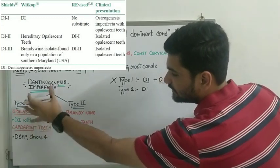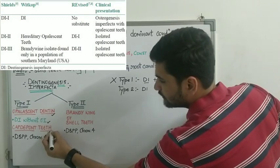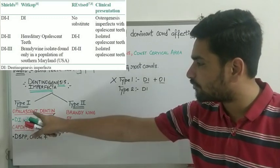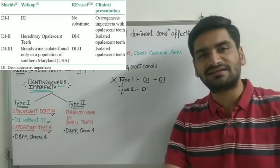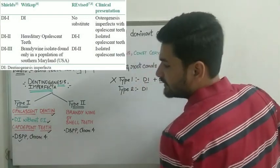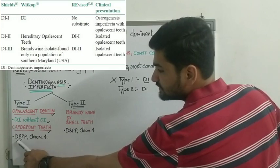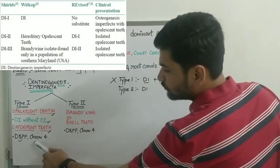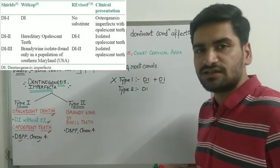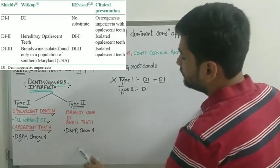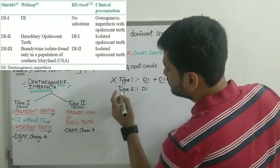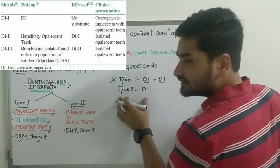The teeth in Shields type 2 category are also known by another name - capty point teeth. So in MCQs it might be asked: opalescent dentin or capty point teeth are seen in which type? The gene which is going to be affected is the DSPP gene, that is dentin sialophosphoprotein gene, on chromosome number 4. This can also be asked in MCQs - DSPP gene on chromosome number 4.